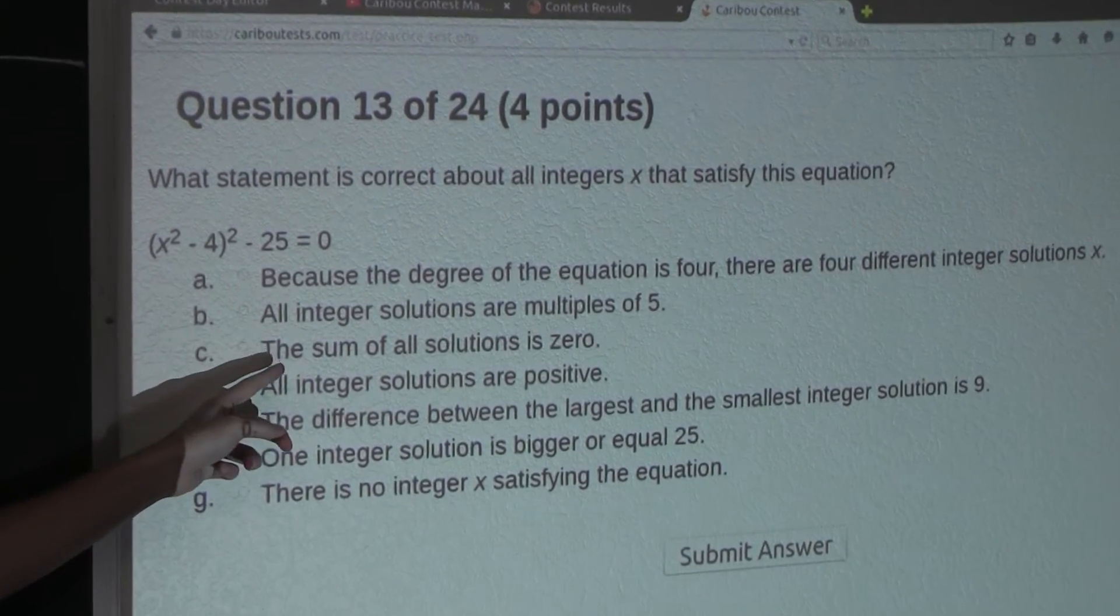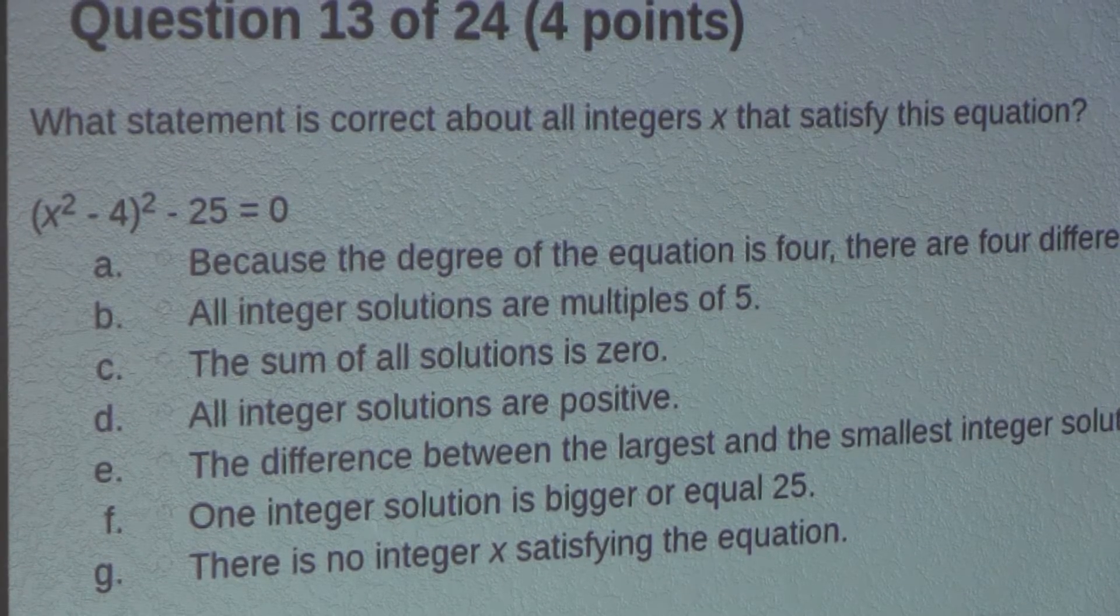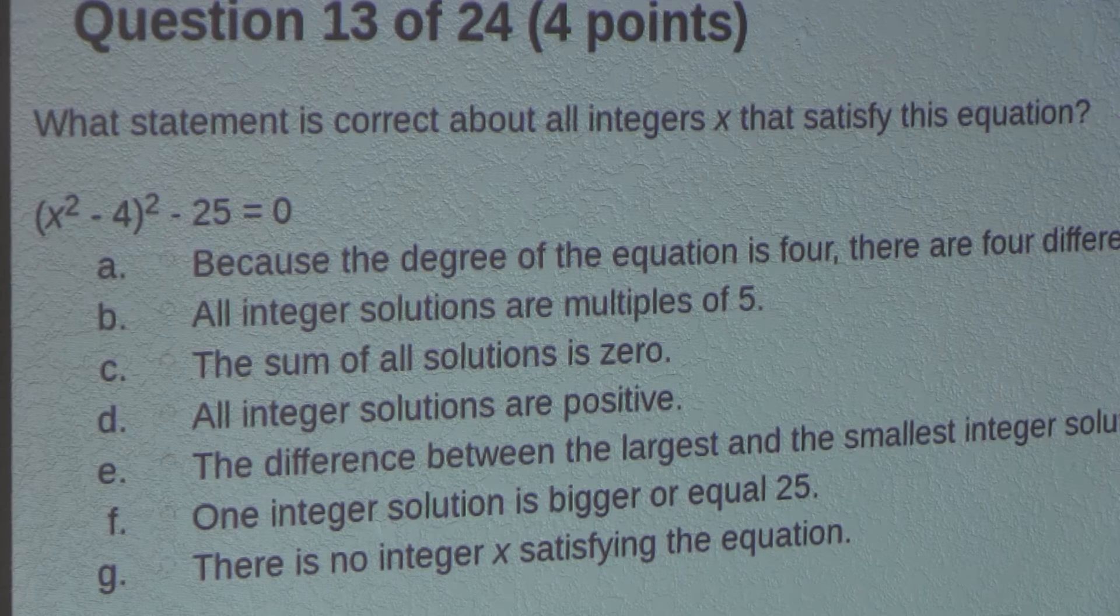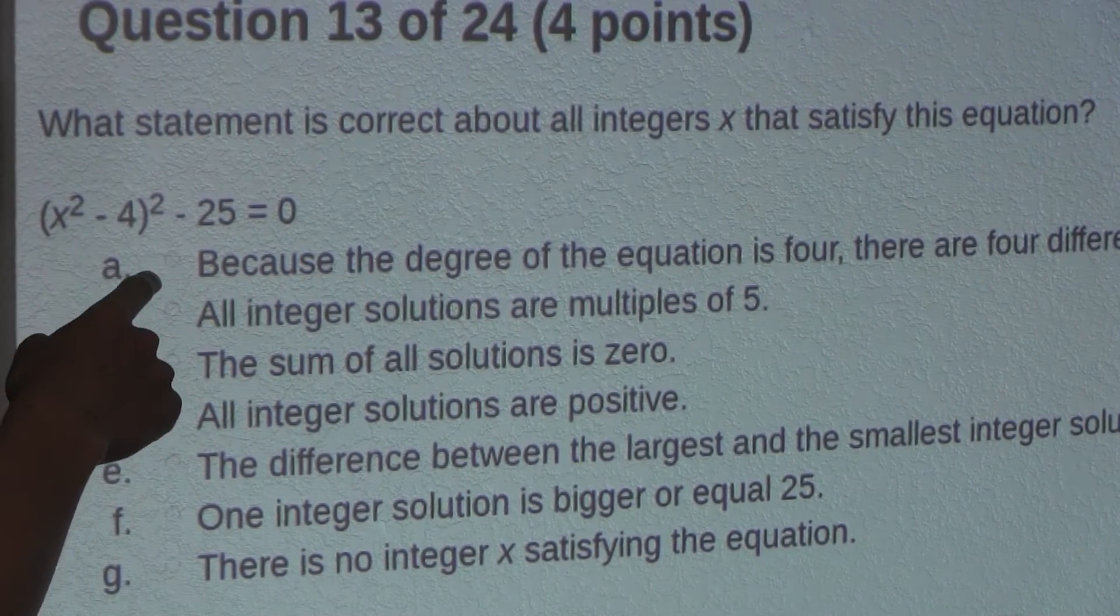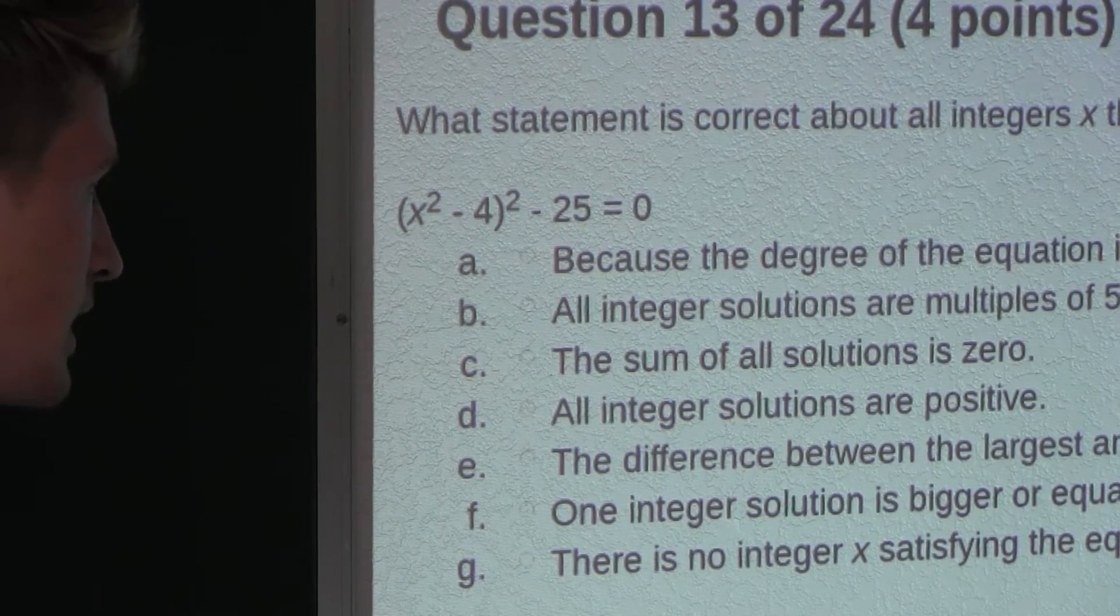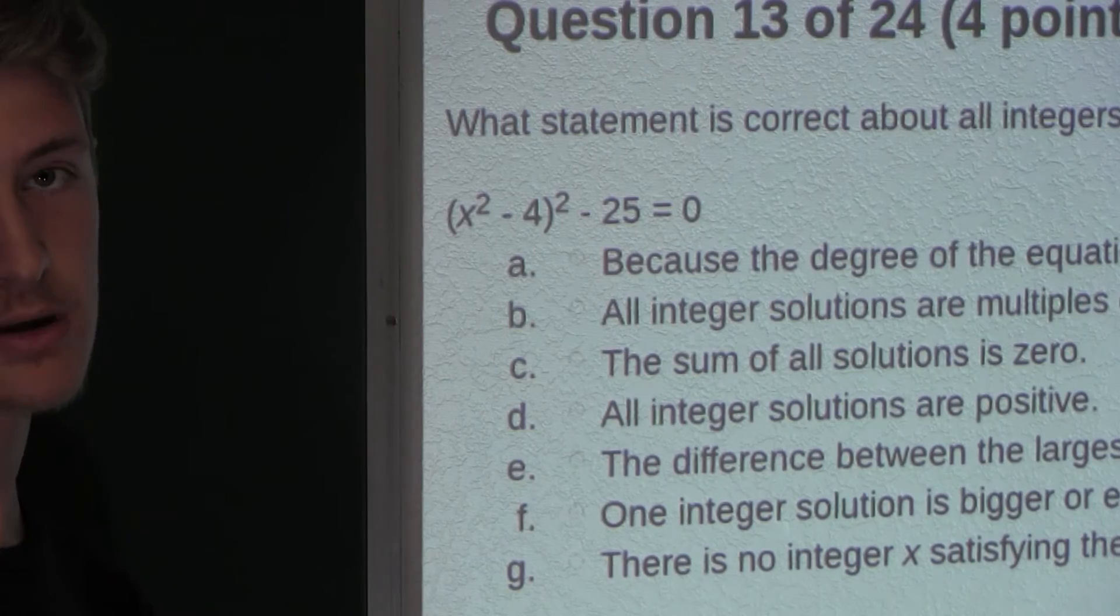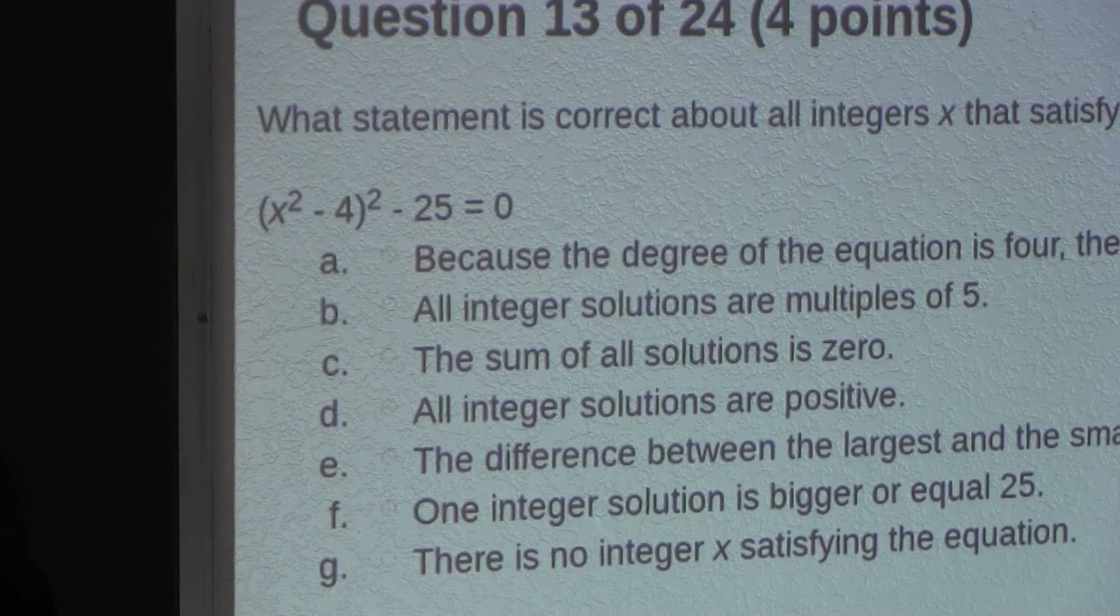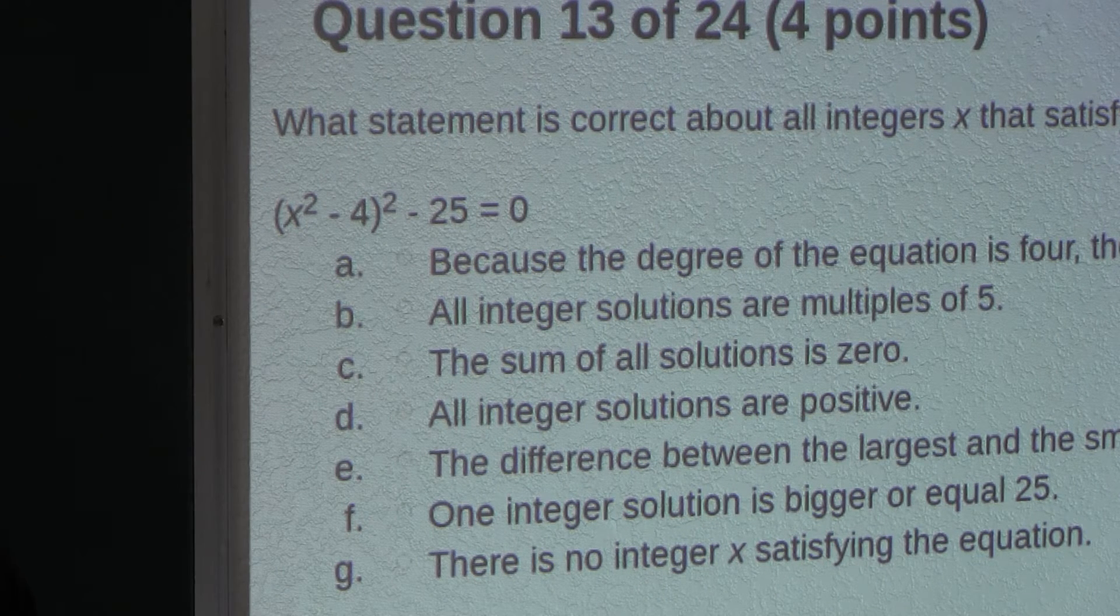Option C: The sum of all solutions is 0. Well, we don't even have to know what x is equal to, because the powers of x in this equation are even. So here we have x squared, well, 2 is even. And even if we do x squared squared, that would be x to the power of 4, and that is also even. So therefore, if there is a positive x solution, then the negative of that must also be a solution. So if we have x and negative x, the sum of that will just be 0. So therefore, we know that option C must be a correct option.